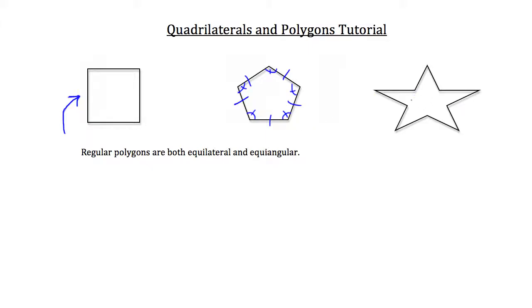However the last figure, the star, is not going to be a regular polygon. You can see that each of these side lengths here appears to be a different length and the angles are definitely going to be different.